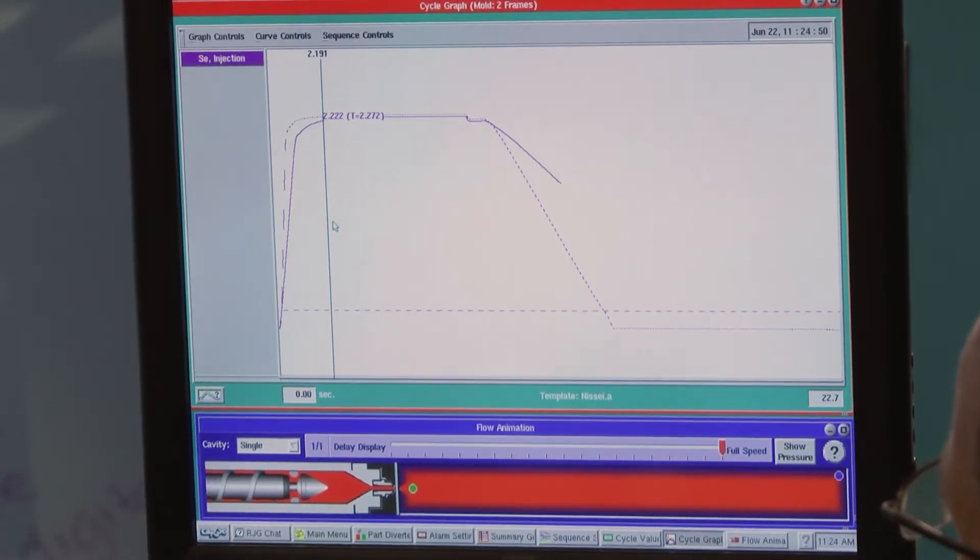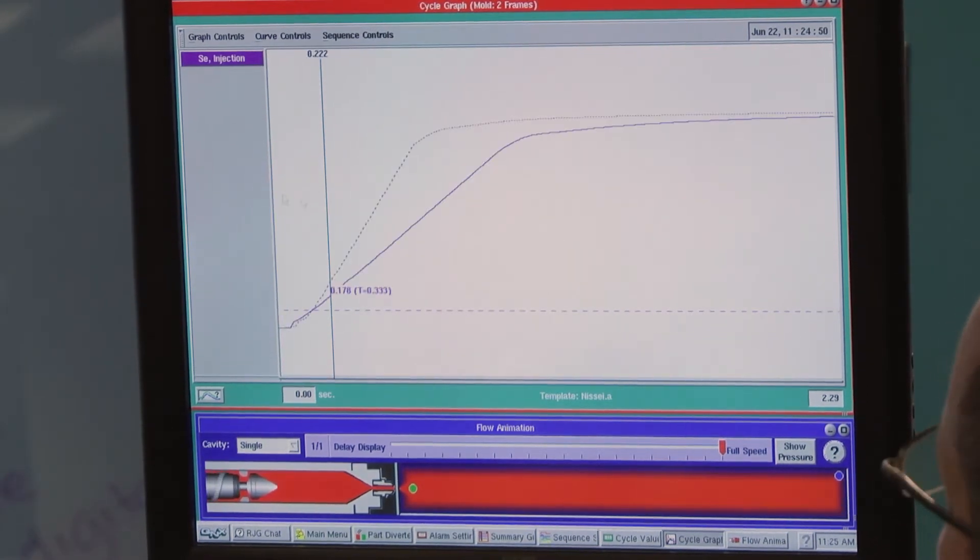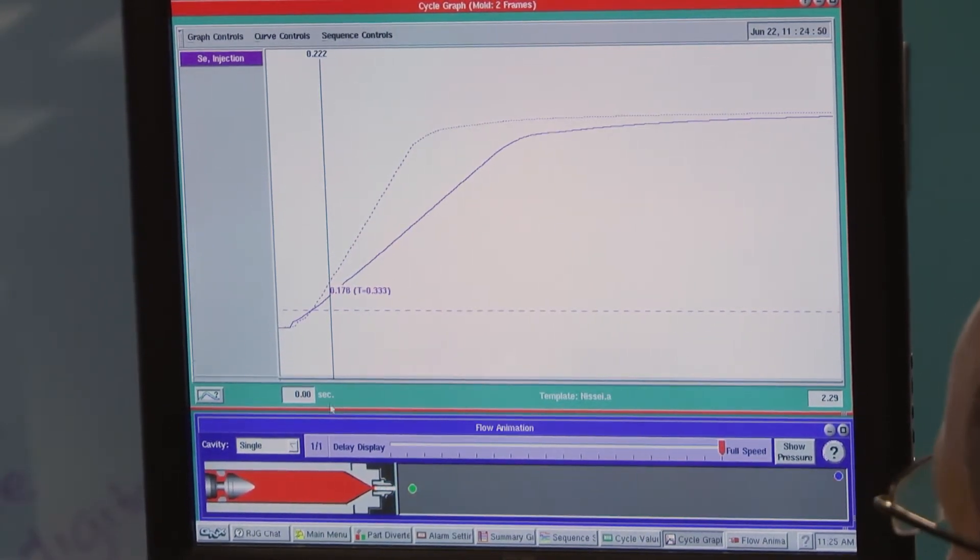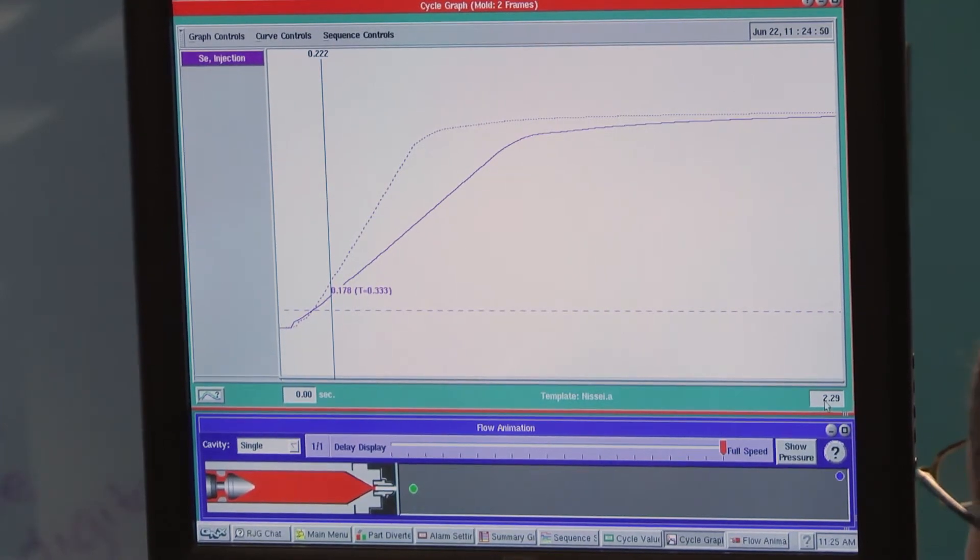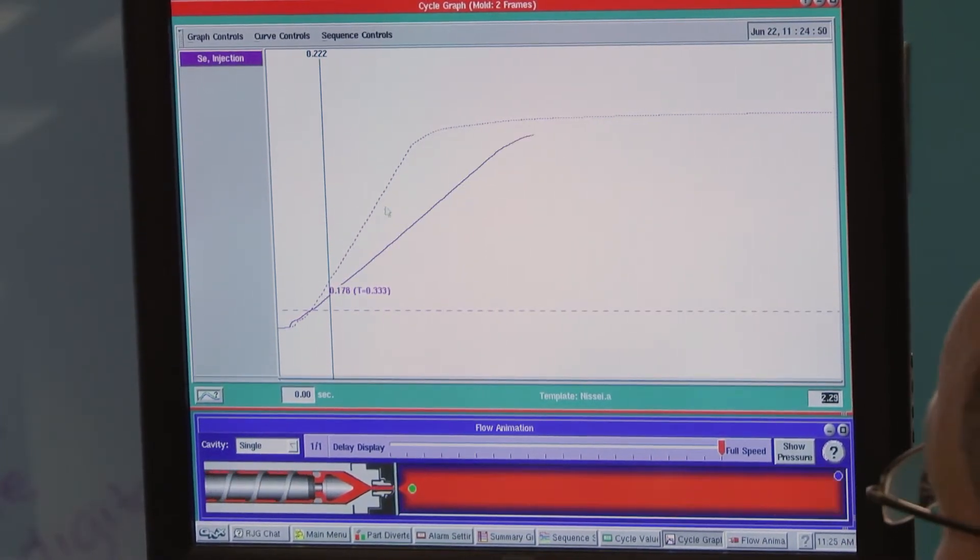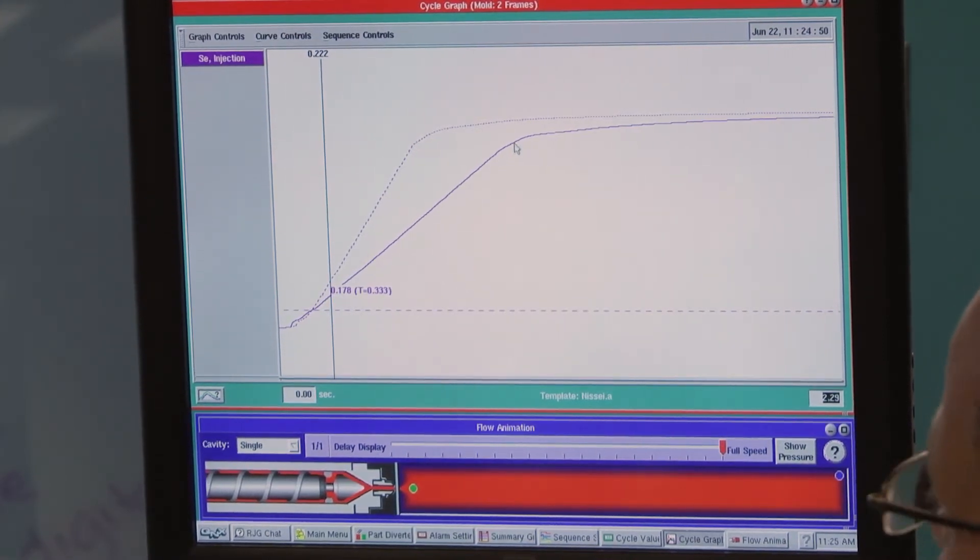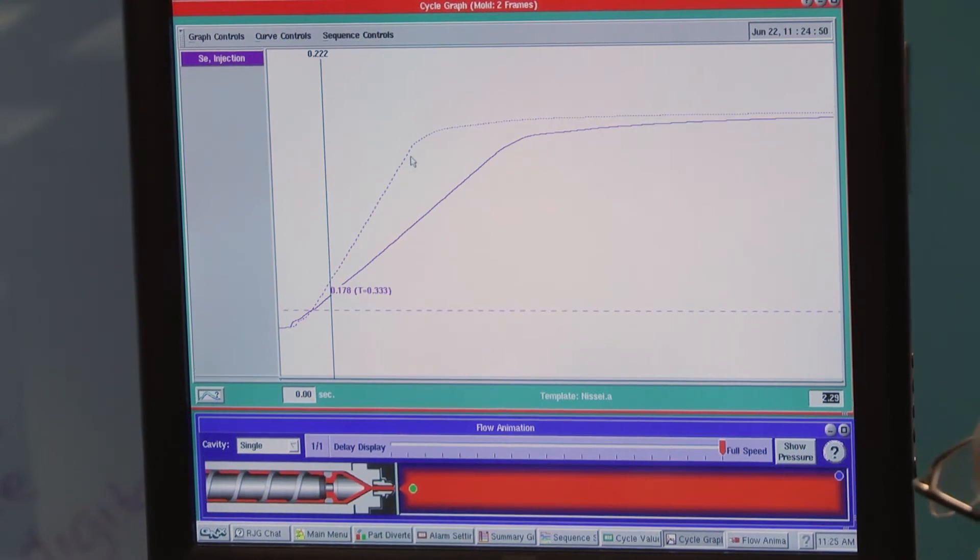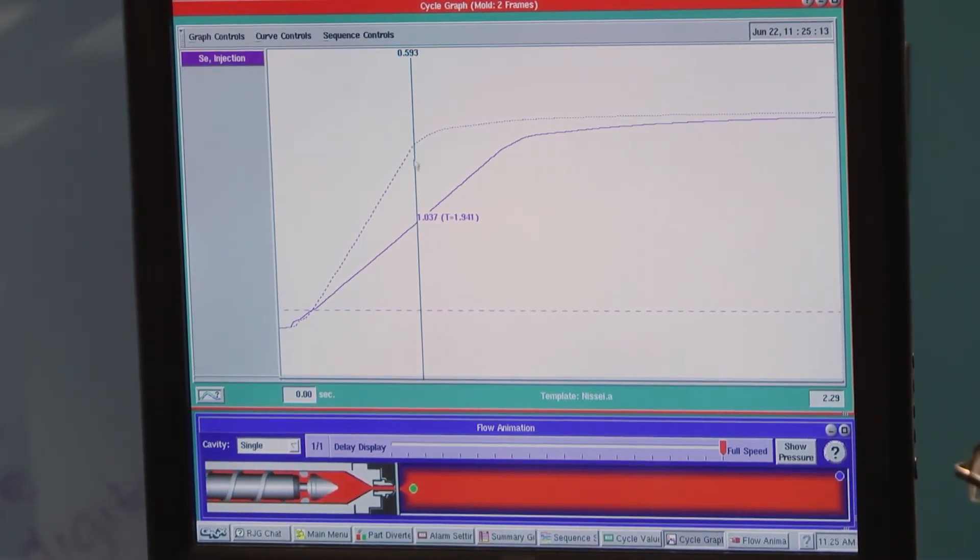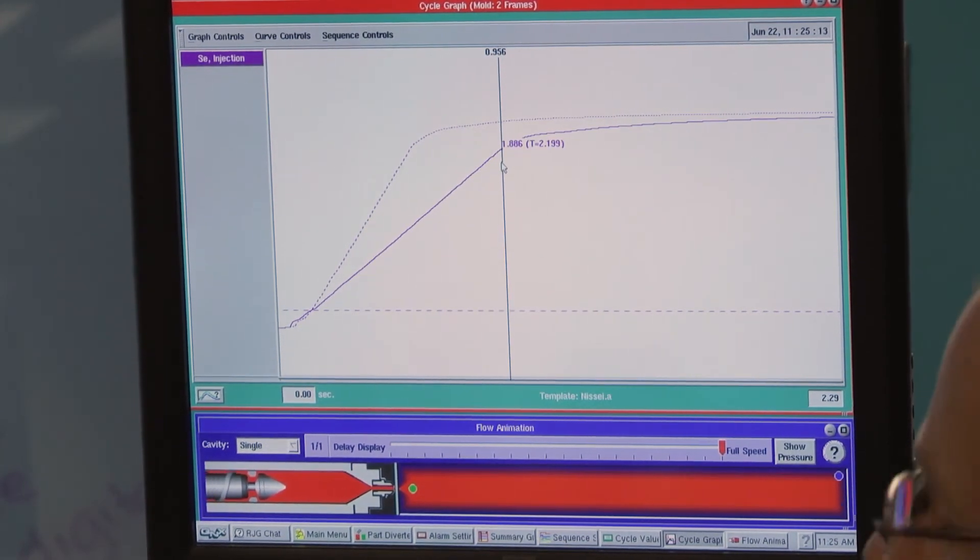We can actually zoom in on that section by clicking and dragging. Now we're looking from zero to about two seconds. We can see where the process was running before and where it's running now at its slower fill speed. The main differentiation that we can see is that our fill time before was something close to here, and now it's taking this long to fill.